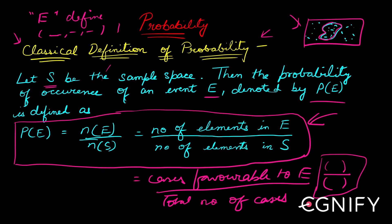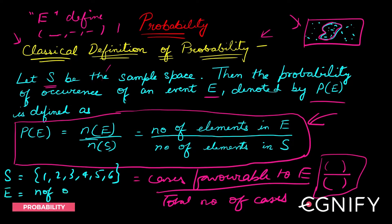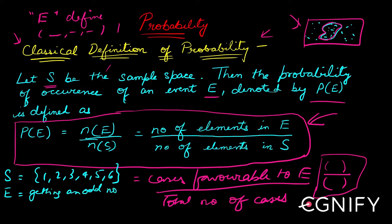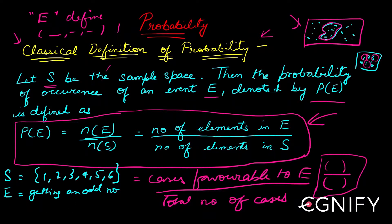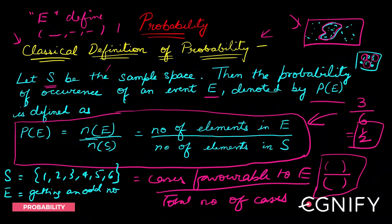Let's take a basic example: a dice is rolled, so the sample space is {1, 2, 3, 4, 5, 6}. Say event E is getting an odd number. Your sample space has six elements, and the favorable cases are 1, 3, and 5 — three odd numbers. So the probability is the number of elements in E, which is 3, divided by the total number of elements, which is 6 — giving us 3/6 = 1/2.